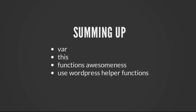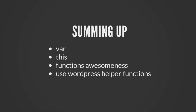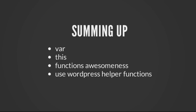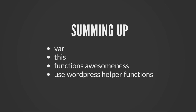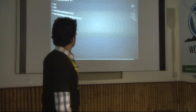Summing up: we should always use `var`. `this` is very confusing but once you understand it, it's really powerful. JavaScript has really good functional awesomeness — we should use functional constructs, that is how Underscore.js and Backbone.js are working these days. And please use WordPress helper functions.